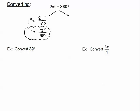So if I'm going to convert 30 degrees into radians, I'm going to take my 30 degrees and multiply by this ratio π/180.